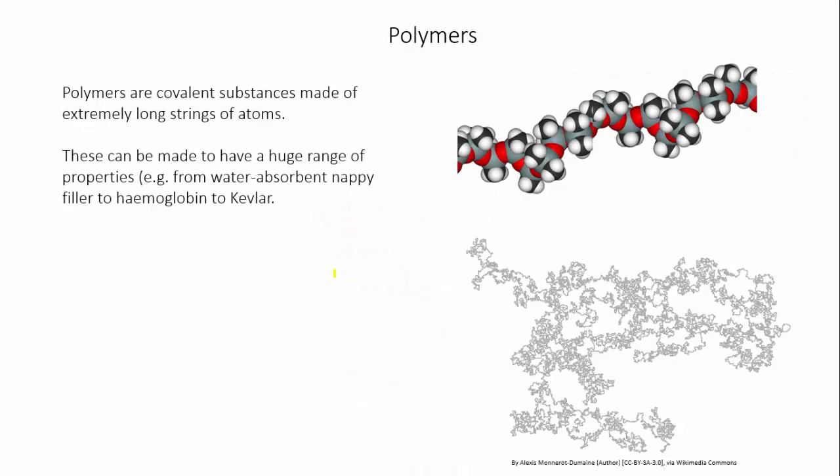There's also the class of covalent compounds known as polymers. These are outside the scope of this part of our course, but you will encounter them later, and they're worth mentioning briefly here, if only because they're so common in our world. Polymers are covalent molecules that are made by joining atoms together in extremely long strings, and by long I mean hundreds of thousands or even millions of atoms long.